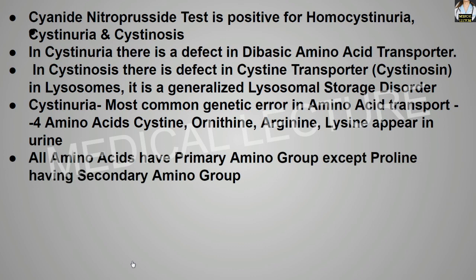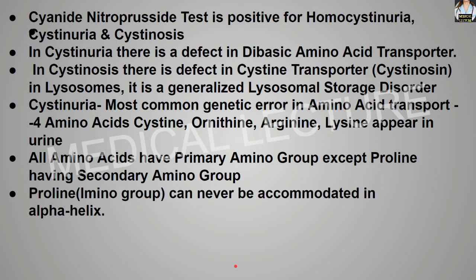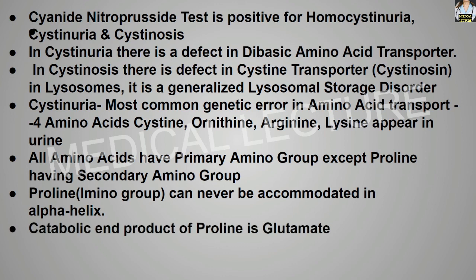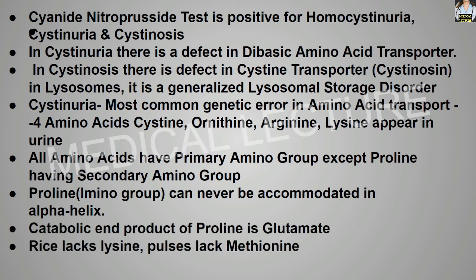All amino acids have a primary amino group except proline, which has a secondary amino group. Because of this specialized group, proline can never be accommodated in the alpha helix. The catabolic end product of proline is glutamate. Rice lacks lysine while pulses lack methionine, so eating a varied diet ensures all essential amino acids are obtained.